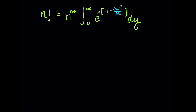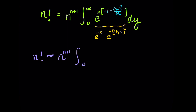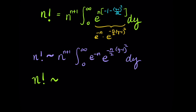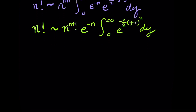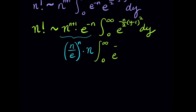Substituting, our integrand's exponent becomes negative 1 minus (y minus 1) squared over 2. We can pull out the constant part: e to the negative n. Re-examining the remaining integral, we now have to deal with the integral from 0 to infinity of e to the negative n over 2 times (y minus 1) squared. We're getting very close to making this look like a Gaussian integral, so we'll clean up the constants a bit.